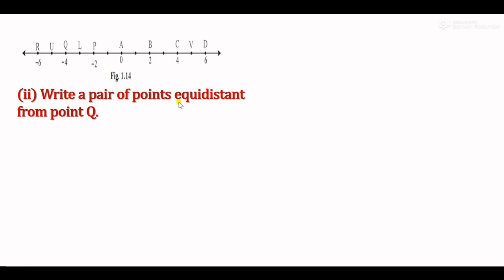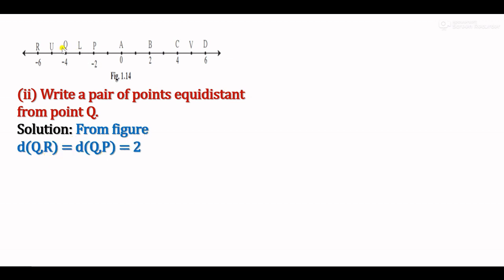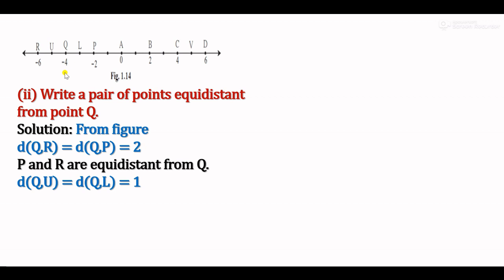Sub-question 2: Write a pair of points equidistant from Q. From the figure, Q to R is 2 units and Q to P is also 2 units, so R and P are equidistant from point Q. Additionally, Q to U is 1 unit and Q to L is also 1 unit, so U and L are also equidistant from point Q.